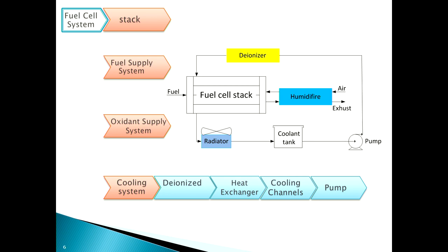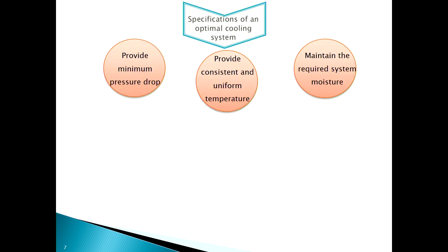The cooling system requires deionized water, a heat exchanger, cooling channels, and a pump. The specifications of an optimal cooling system include: providing a consistent and uniform temperature along the fuel cell stack, minimum pressure drop — which is beneficial for pumping — and maintaining the required system moisture, since the proton exchange membrane area must remain moist.